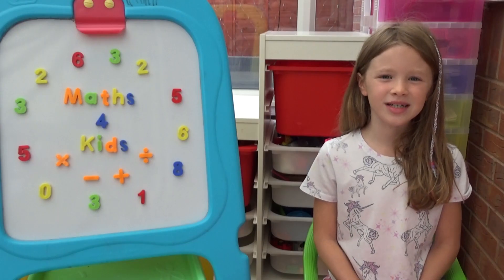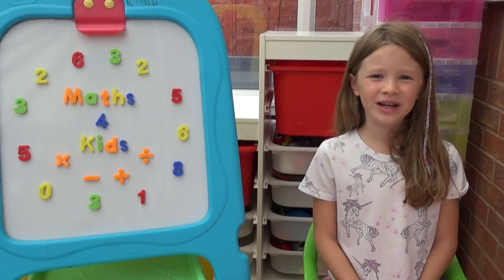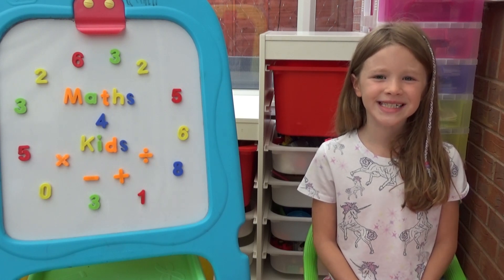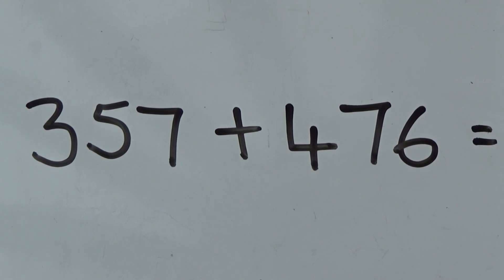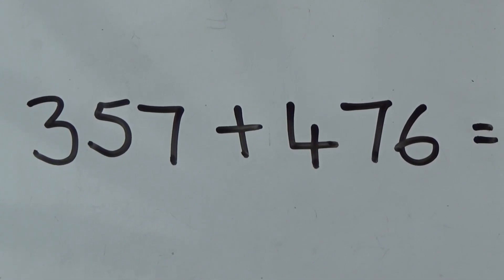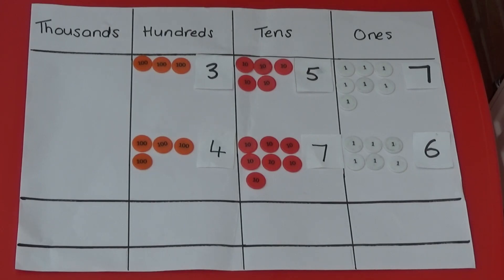This time I'm going to show you what happens when the 1s and 10s add up to 10 or more. I'm going to use column method to add together 357 and 476. I'm going to add together the 7 and the 6 1s.